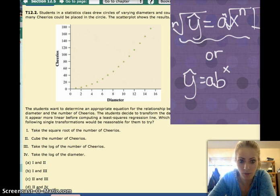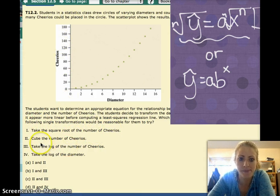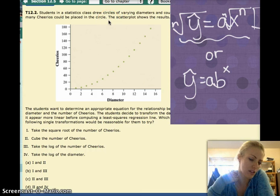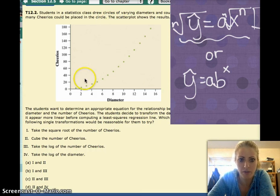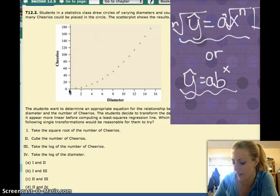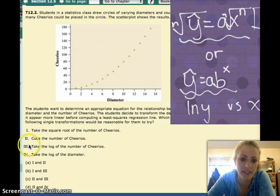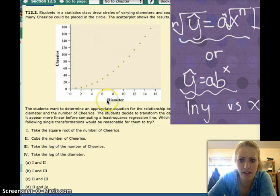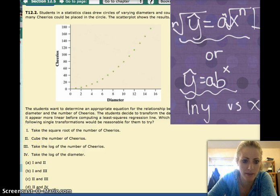Take the square root of the number of Cheerios, because that's your y. Cubing the number of Cheerios is just going to make this an even steeper graph. So that's not going to work. Three, take the log of the number of Cheerios. If you take the log of the number of Cheerios, then that would be assuming an exponential relationship, where you're graphing the log of y versus x. So that might not be a bad idea. Logging the diameter is not a transformation we've done before. So one and three are the best answers.